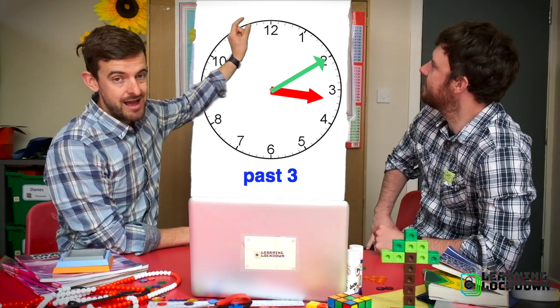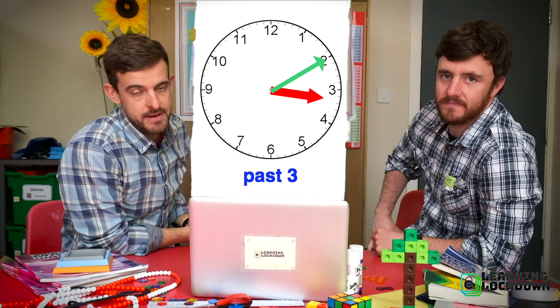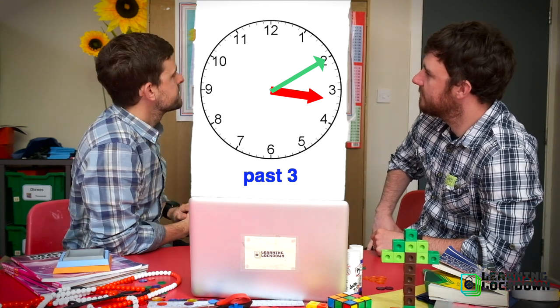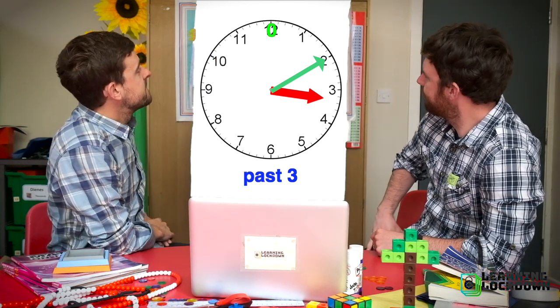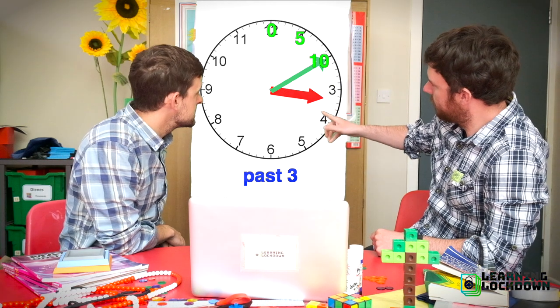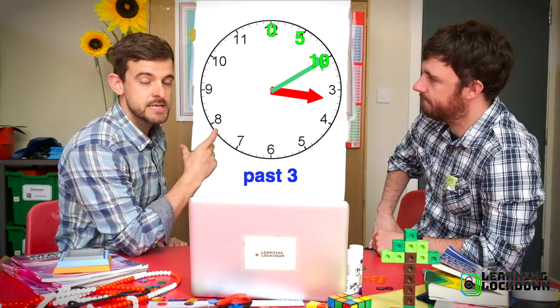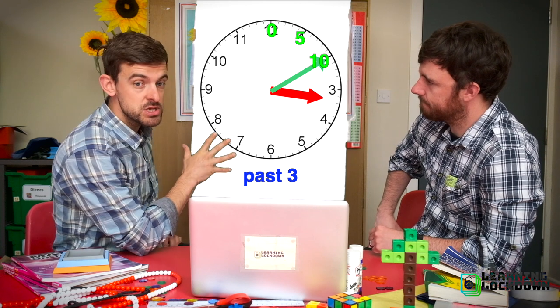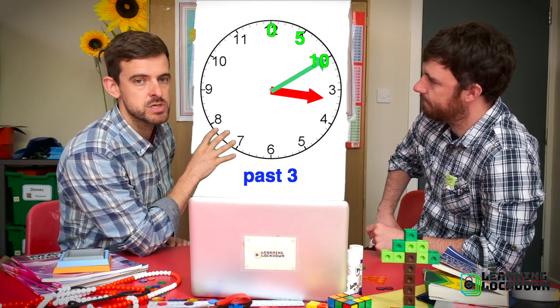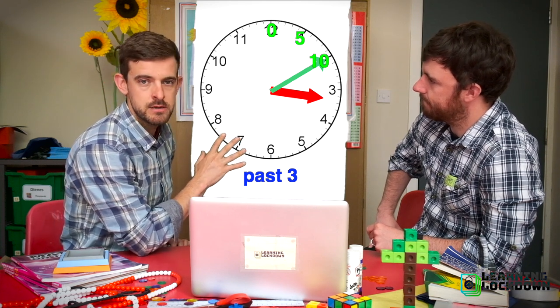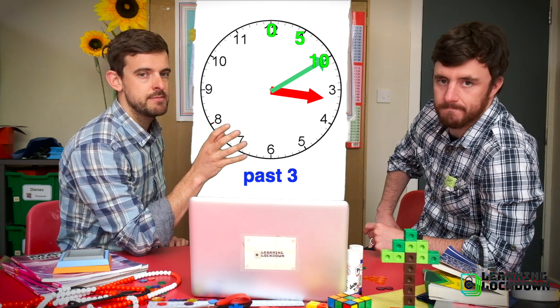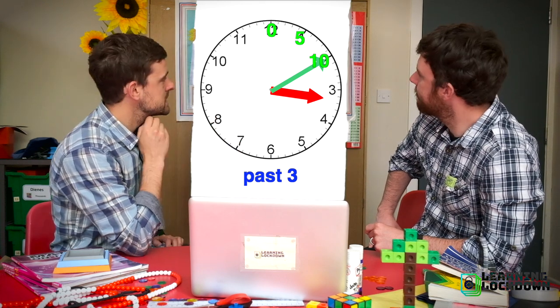We're going to count round in fives using our hour intervals to see how many minutes we are past. Here we go: zero, five, ten. Oh, there you go. Our minute hand is where it will be 10 minutes. We know it's pointing at a two. Remember, the two is for the hour, so we don't say two past three because behind that two is the minute scale and that is 10 minutes. So this is 10 past three.